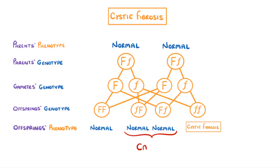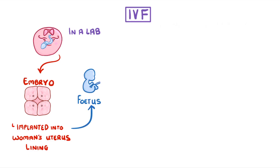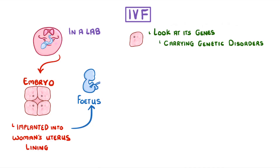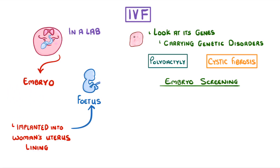A little while ago we did a video on how we can control fertilization with hormones, and we looked at a process called IVF, or in vitro fertilization, where egg cells can be fertilized with sperm in a laboratory. Once the fertilized egg has grown into an embryo it can be implanted back into the woman's uterus lining and grow into her fetus. Before it's implanted though, we can actually take one of these cells from the embryo and have a look at its genes to see if it's carrying any genetic disorders such as polydactyly or cystic fibrosis. We call this process embryo screening, and if we find alleles that could cause a disorder, then the parents and doctors might decide to discard that embryo and use a different one instead.